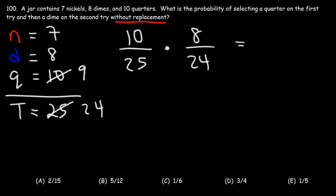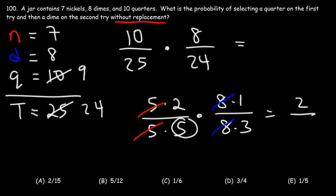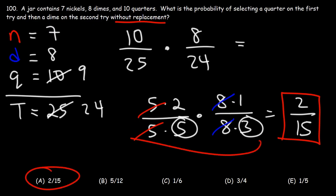We just need to multiply these two probability values to get the answer. Let's simplify: 10 is 5 times 2, 25 is 5 times 5, 8 is 8 times 1, 24 is 8 times 3. We can cancel a 5 and cancel an 8. So we have 2 times 1, which is 2, and 5 times 3 is 15. The probability that these two events will occur is equal to 2 out of 15. Answer choice A is the right answer.